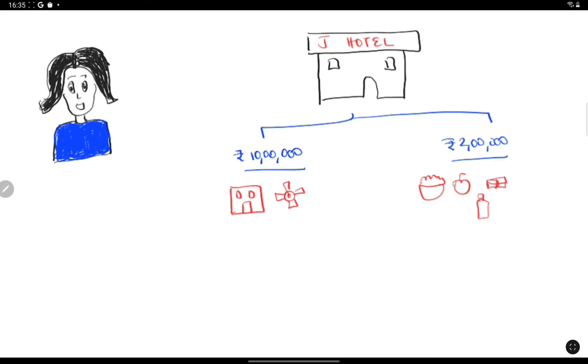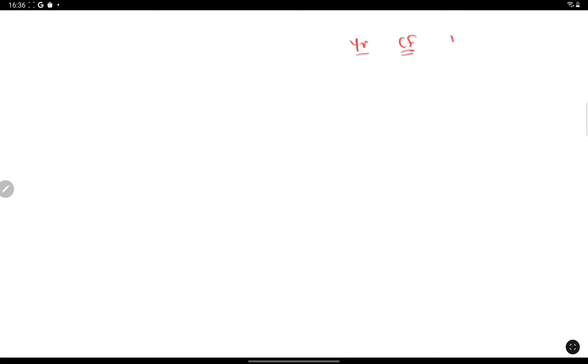Hence, her total cash outflow is Rs. 12 lakhs. Now, the annual cash flow that is expected from her hotel business is Rs. 3 lakhs a year for a period of 5 years.